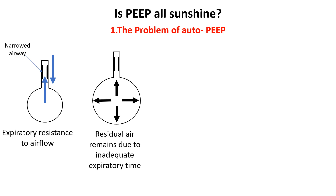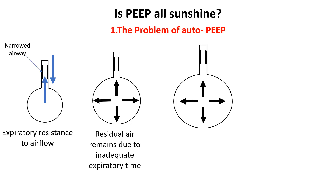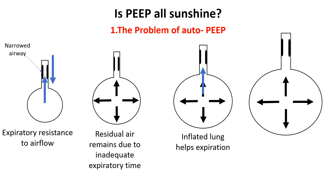With each successive breath, alveoli continue to expand, increasing the pressure inside them. This elevated alveolar pressure enhances lung recoil, which helps push some trapped air past the obstruction. Eventually, the amount of air exhaled in each breath matches the amount inhaled, preventing further lung expansion. This persistent, unintentional positive pressure in the alveoli is called auto-PEEP, and the resulting increase in lung volume is referred to as dynamic hyperinflation.